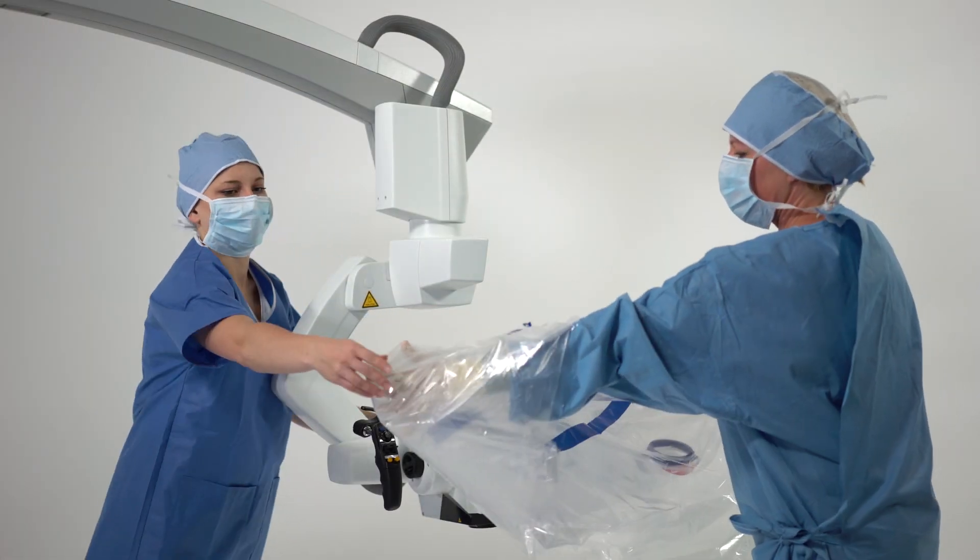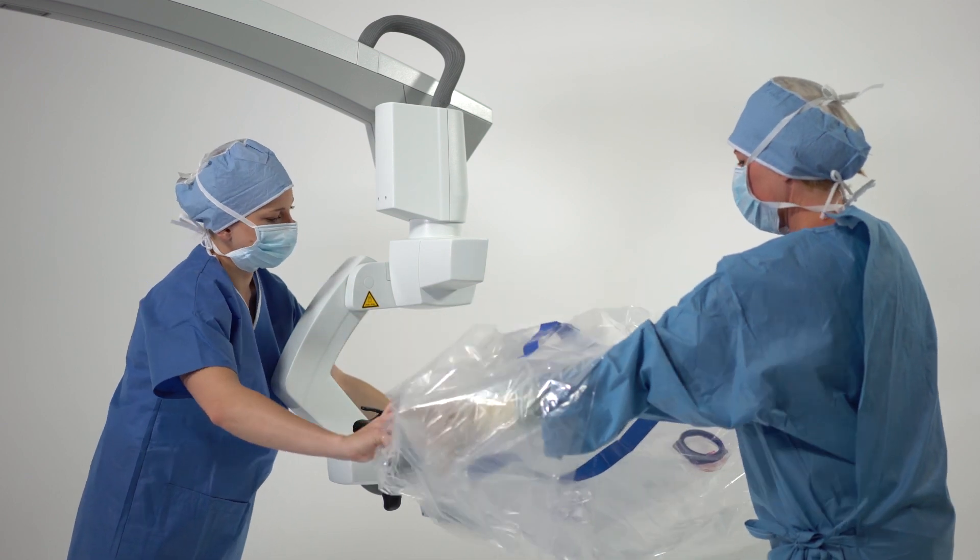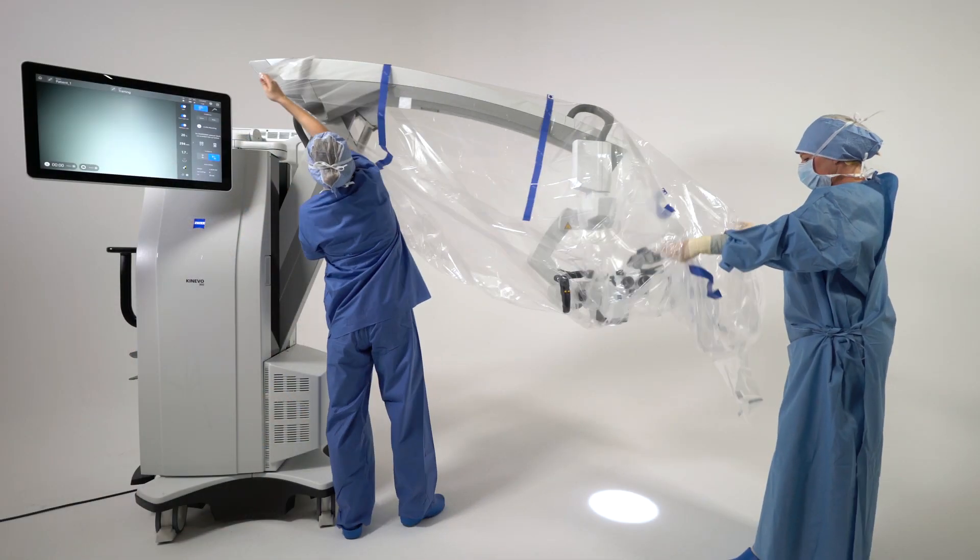First, cover the head of the Zeiss Kenevo 900. Then slide Zeiss Smart Drape over the arm.